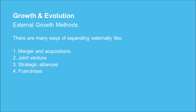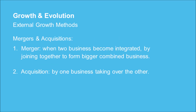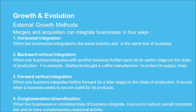There are many ways of expanding externally: 1) mergers and acquisitions, 2) joint ventures, 3) strategic alliances, and 4) franchises. A merger occurs when two businesses become integrated by joining together to form a bigger combined business. An acquisition occurs when one business takes over another.